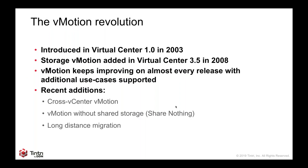The vMotion revolution is really what changed the computing industry and flipped it on its head. vMotion itself was introduced back in 2003, about five years into VMware's existence, and came in Virtual Center 1.0. That was amazing — taking the contents of your memory and compute and being able to move it. You could be in a VM with a workload and move it to a different piece of hardware, even from a different vendor.